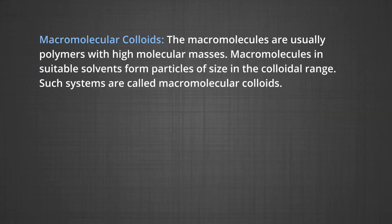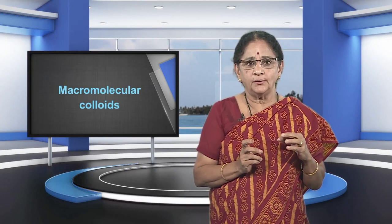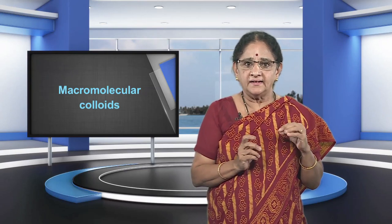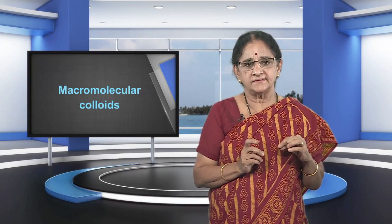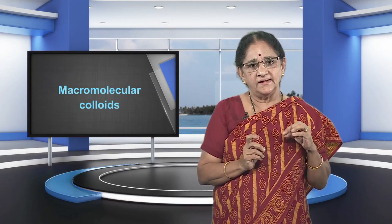Macromolecular colloids: the macromolecules are usually polymers with high molecular masses. Macromolecules in suitable solvents form particles of size in the colloidal range. Such systems are called macromolecular colloids. These colloids are quite stable and resemble true solutions in many respects. Examples of naturally occurring macromolecules are starch, cellulose, proteins, and enzymes. Man-made macromolecules include polythene, nylon, polystyrene, synthetic rubber, etc.